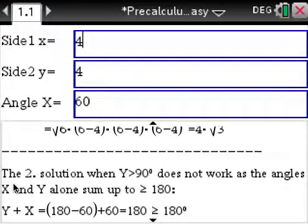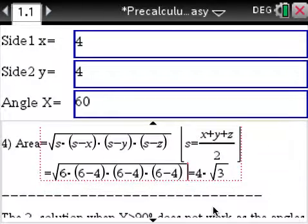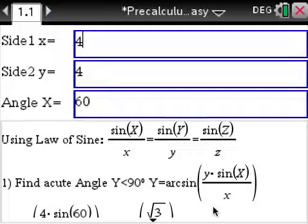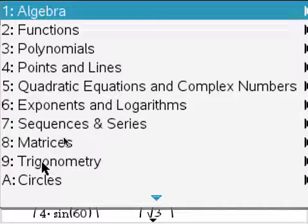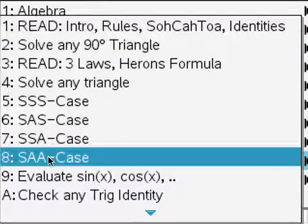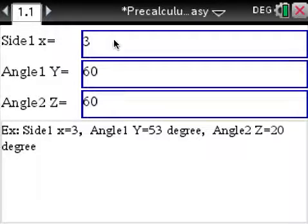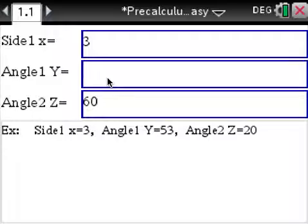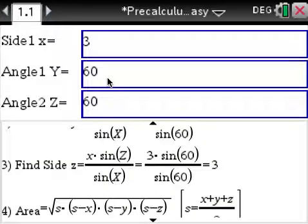Of course we have another explanation over here. The two-solution case: when Y is greater than 90 degrees does not work as the angles X and Y alone sum up to this, and we explain down here a little bit more. If you go back to trig, SAA case, let's plug in 60.